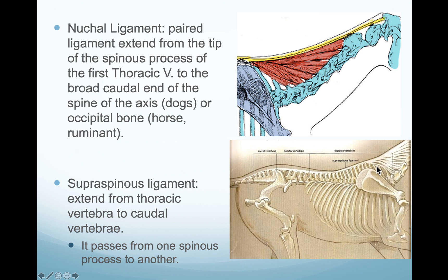We have another ligament found in the epaxial region: the supraspinous ligament. This ligament extends from the spinous process of one vertebra to the adjacent spinous process of the neighboring vertebra. It runs along the dorsal portion of the spinous processes toward the caudal vertebrae. This is called the supraspinous ligament.